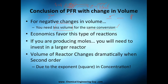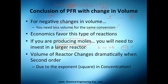Now, if you are producing moles — meaning you are increasing — so you have one mole of A and it turns out to be 3B, you will need to invest in a larger, bigger reactor. Whereas if you have the reaction A plus B, you will need a small one.